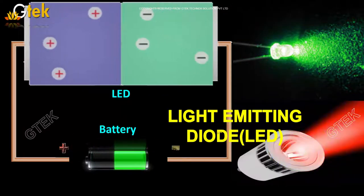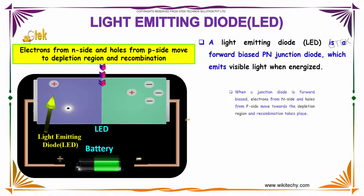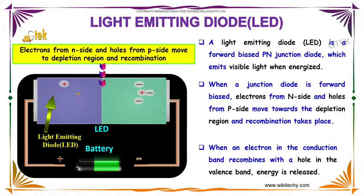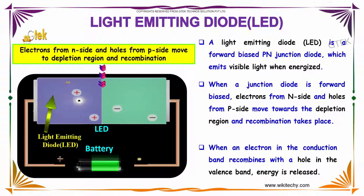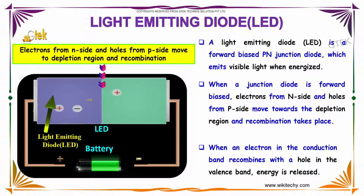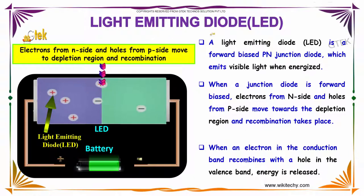We'll talk about the light emitting diode. Here is the electron from the N side and holes from the P side. Electrons from the N side and holes from the P side move to the depletion region and recombination is happening. This is what's happening in a LED — that's a light emitting diode.